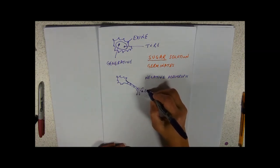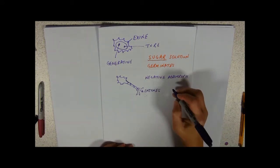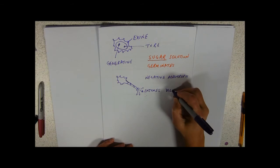Those vesicles will be bursting out by exocytosis and releasing in front of it enzymes. And they're going to digest down through the style tissue.